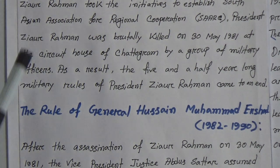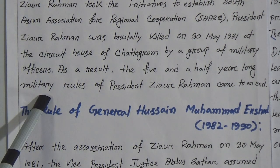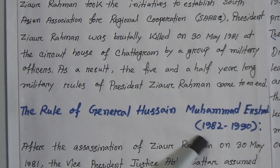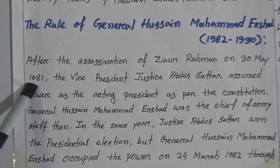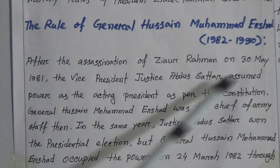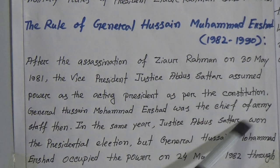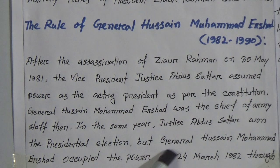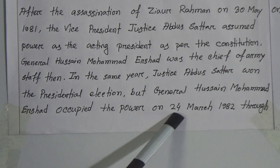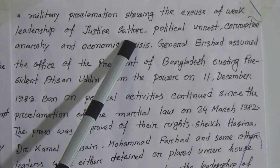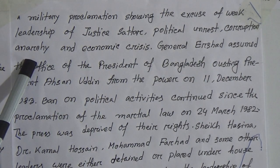After the death of Ziaur Rahman, we experienced another military rule — the rule of General Hussain Muhammad Ershad from 1982 to 1990. After the assassination of Ziaur Rahman on 13th May 1981, the Vice President, Justice Abdus Sattar, assumed power as Acting President as per the Constitution. General Hussain Muhammad Ershad was the Chief of Army Staff then. Justice Abdus Sattar won the presidential election, but General Ershad occupied power on 24th March 1982 through a military proclamation, citing excuses of weak leadership, political unrest, corruption, anarchy, and economic crisis.